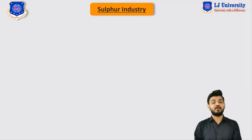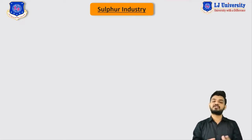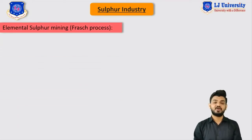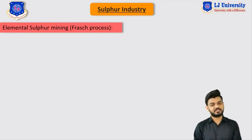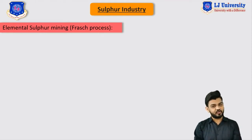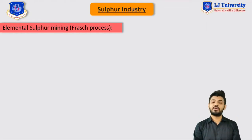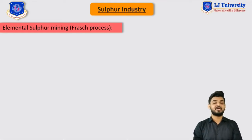In this video we are mainly going to focus on the different production methods for sulphur, in which we are going to discuss the Frasch process for the extraction of elemental sulphur from the earth's surface. This Frasch process is very important from your exam point of view, as it has been asked for 5 to 7 marks in university exams many times.